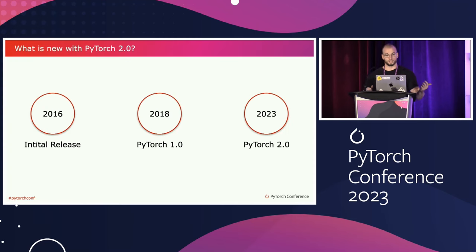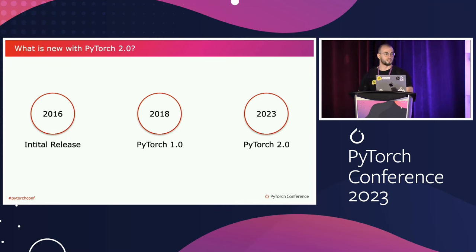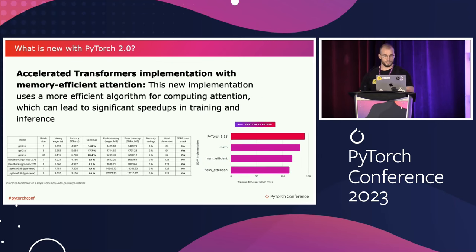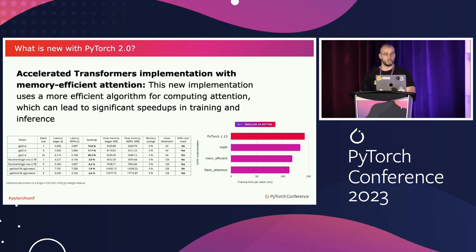What's new with PyTorch 2.0? We heard this morning that the initial release of PyTorch was in 2016, from Facebook's FAIR research institution. Then in 2018, PyTorch became production ready with PyTorch 1.0. And then five years later, earlier this year, we had PyTorch 2.0. One of the most exciting features for us at HuggingFace is that we got an accelerated Transformers implementation with more memory-efficient attention.